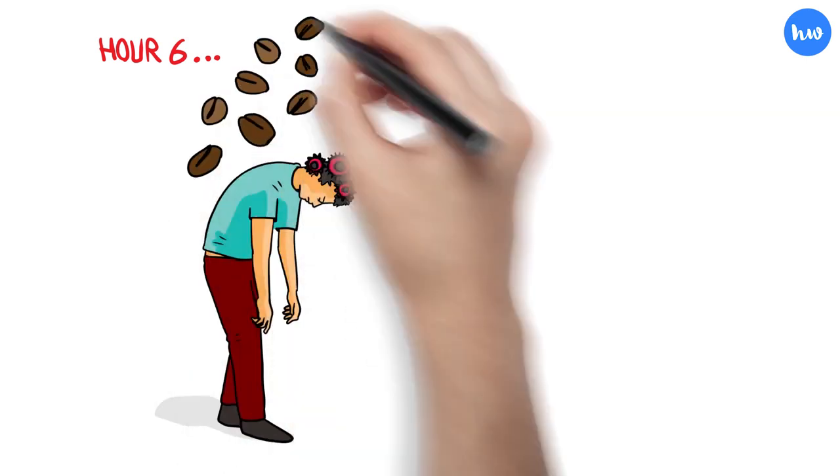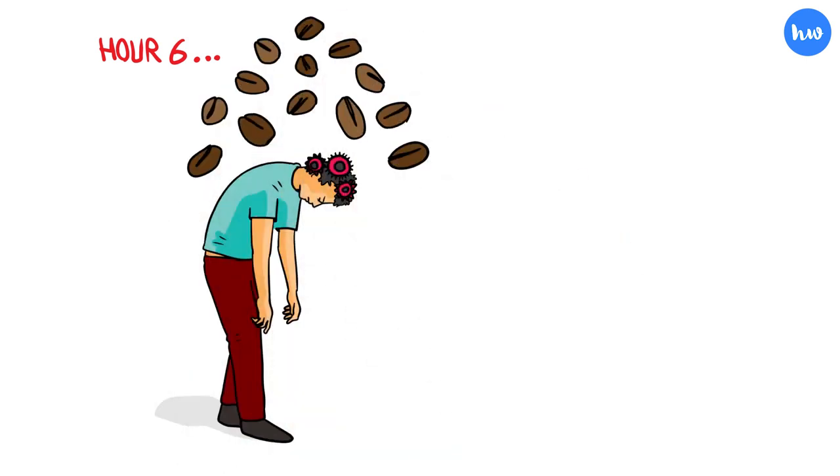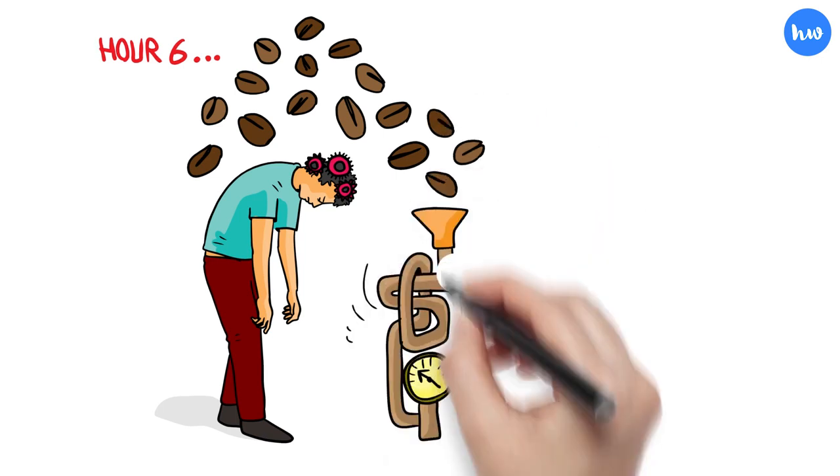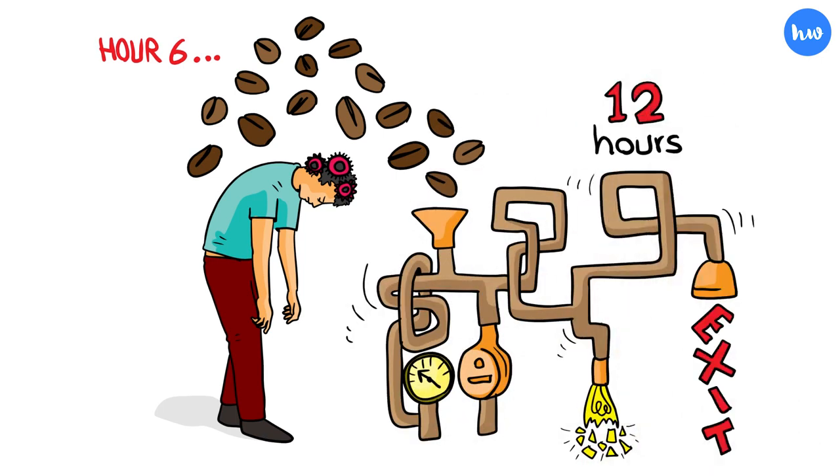By hour 6, your body is still working to absorb the high levels of caffeine, even though the effects have long worn off. In fact, the caffeine won't be able to work its way out of your system until the 12-hour mark.